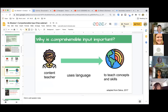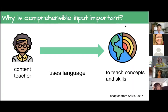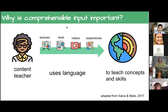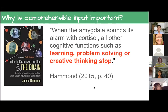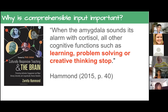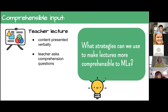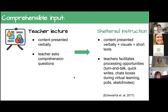Why is comprehensible input so important? Content teachers use language — lectures, presentations, texts, videos, and experiences — to teach content and skills. When the amygdala sounds its alarm with cortisol, all other cognitive functions such as learning, problem solving, or creative thinking stop. If we don't establish comprehensible input first, kids are going to be stressed out when they go to produce output. They'll feel less competent, but they are competent — we just have to make sure they get the information. So we use visuals, chunking information, having kids talk together, sketches, and polls.